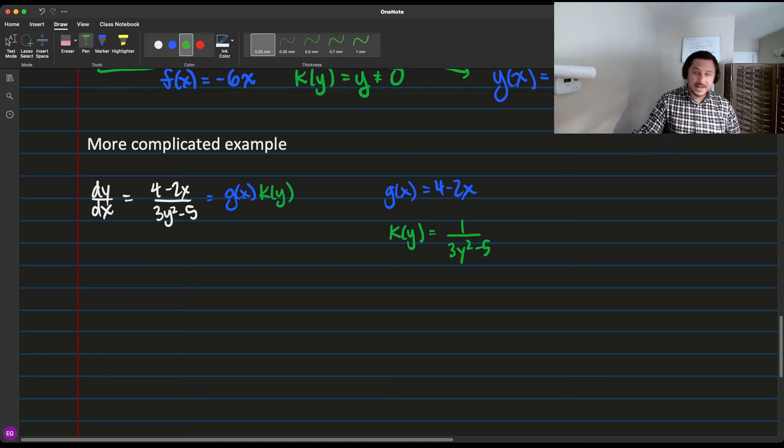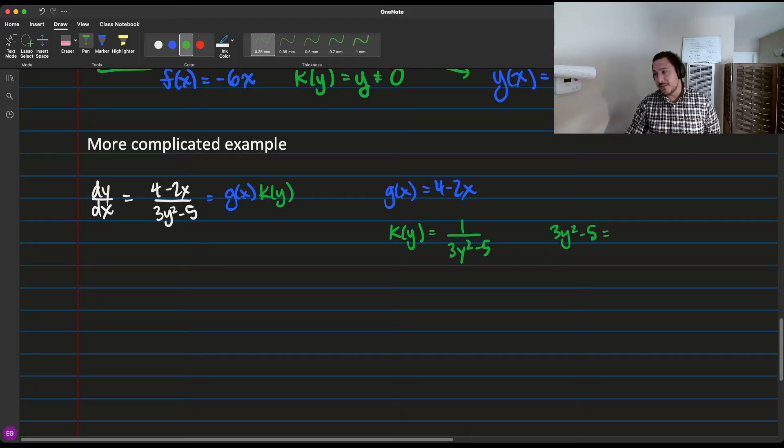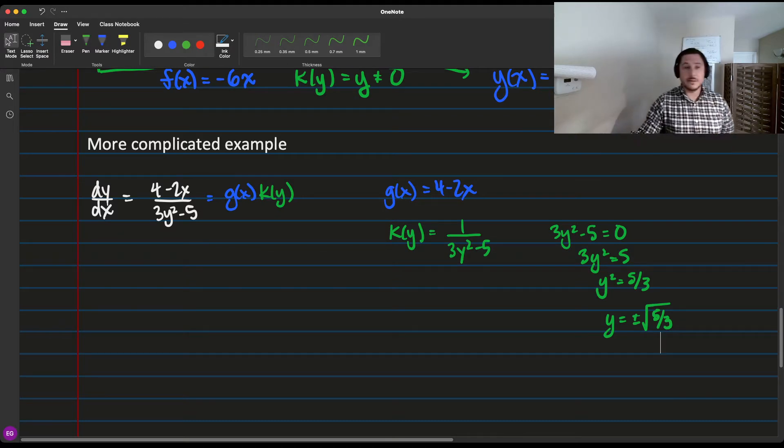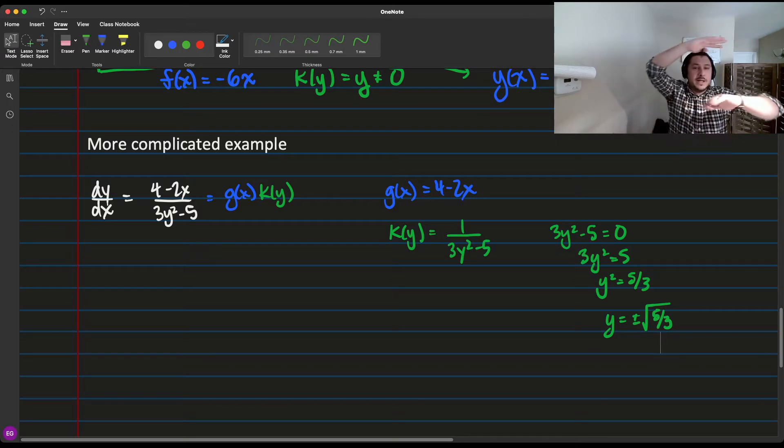So you have an issue if it's equal to 0 or if it's undefined. So when is this undefined? Well, when 3y squared minus 5 equals 0, which is when 3y squared equals 5, which is when y squared equals 5 thirds. So really you have an issue when y equals plus or minus root 5 thirds. This is your problem value. So actually in this case you get two horizontal bars that are going to be issues.